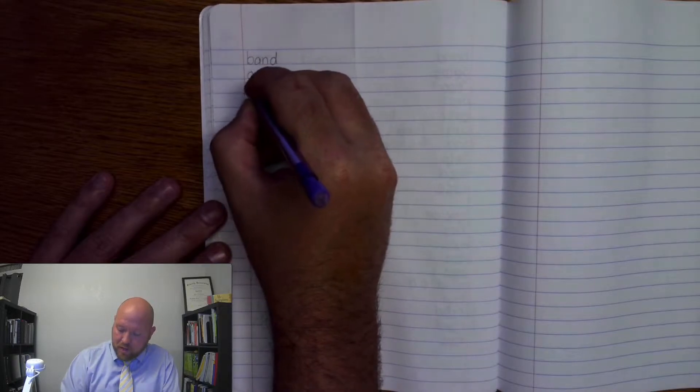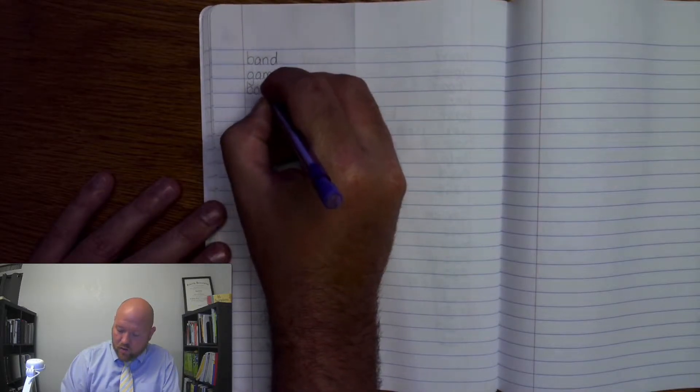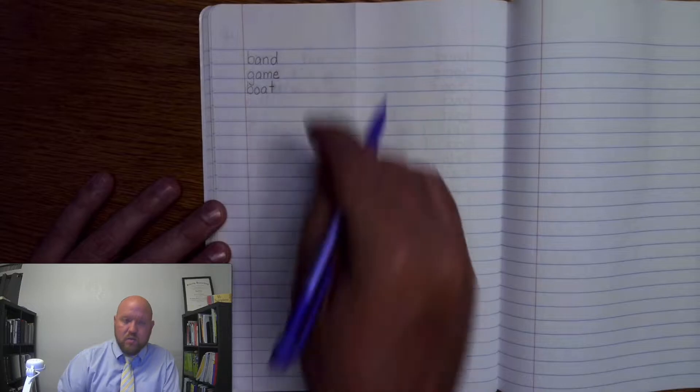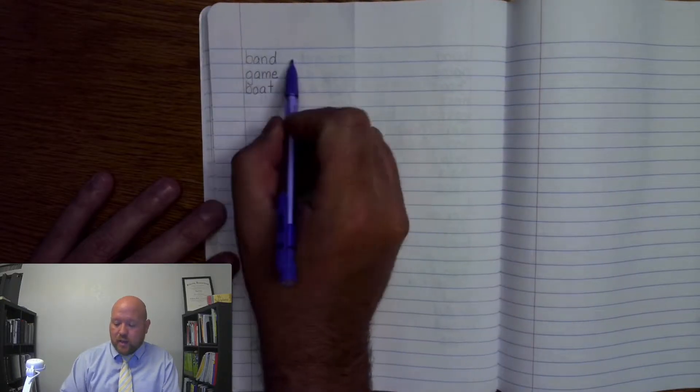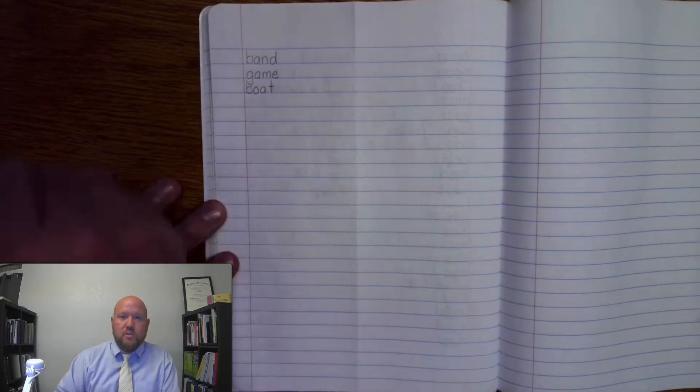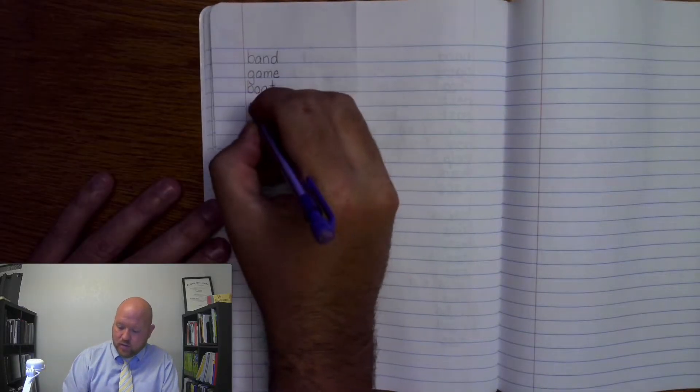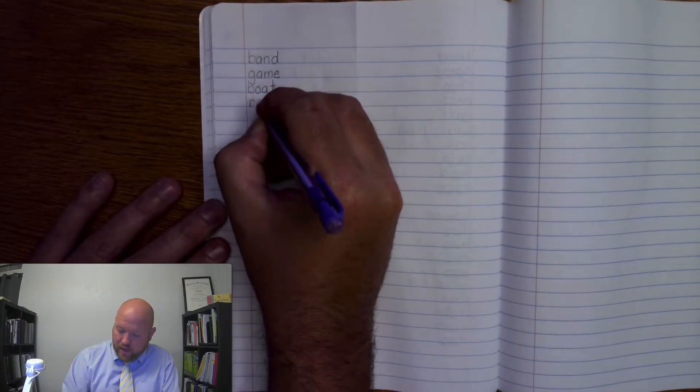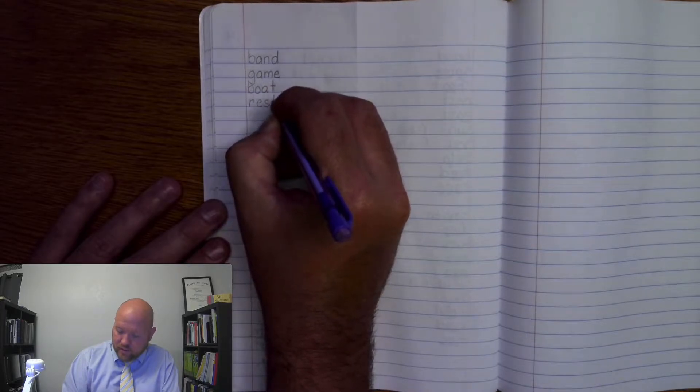Next word, boat. B-O-A-T. Boat. B-O-A-T. Boat. And if you missed any, just put a line through it and then write it out to the side so you know which ones to give extra attention to. The next word, rest. R-E-S-T. Rest. Write it. R-E-S-T. Rest.